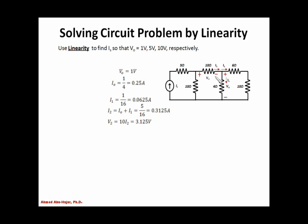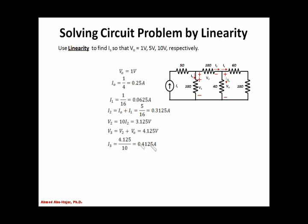Now I have V2 equal to 3.125 volts and Vout equal to 1 volt. Using KVL, I can solve for the voltage across the other 10 ohm resistor, V3. V3 equals V2 plus Vout, giving 4.125 volts. Knowing V3, I find the current through that 10 ohm resistor, I3, as V3 divided by 10 ohms, which is 4.125 over 10, or 0.4125 amps.